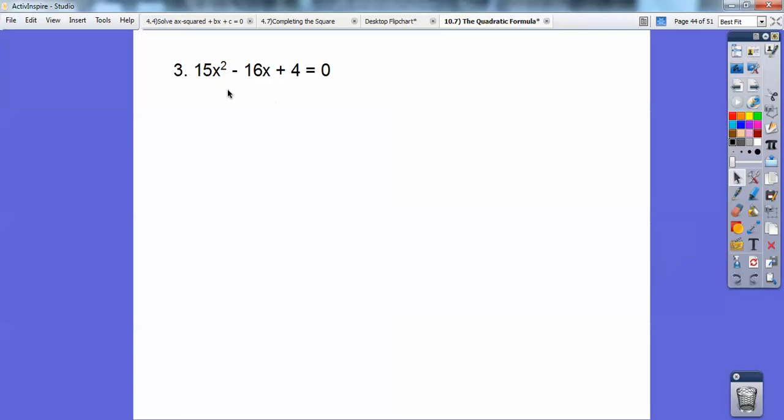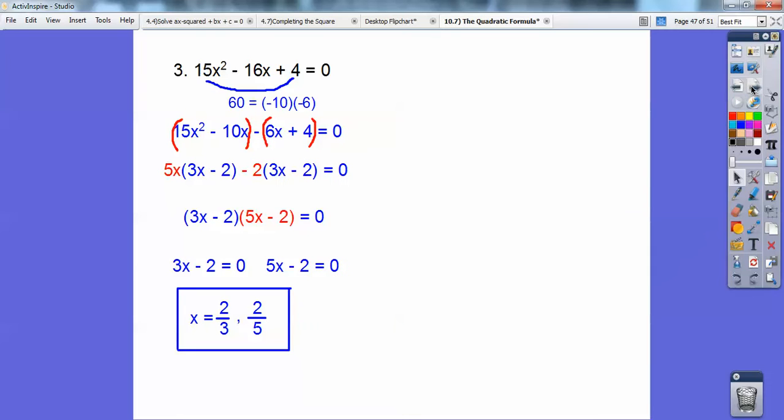Okay, does this guy factor? Actually, this one does, you guys. Multiply 5 times or 15 times 4 is 60. In fact, I did this one in an earlier lesson. Factors of 60 that add to negative 16 are negative 10 times negative 6. So, I'm going to rewrite that guy, replacing the negative 16x with negative 10x minus 6x. All right? And then, so, you can factor by grouping, and when you factor by grouping, there's your answers, 2 thirds and 2 fifths.